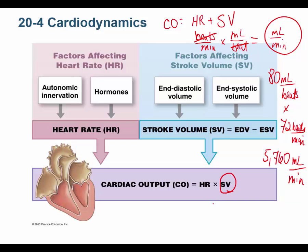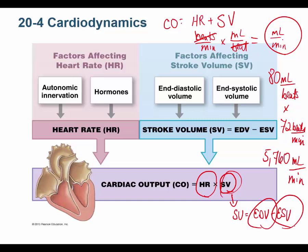Within this formula — CO equals HR times SV — remember that SV equals end diastolic volume minus end systolic volume, and that will likely be on the test. So anything in this formula affects cardiac output: heart rate, stroke volume, EDV, and ESV all affect cardiac output.